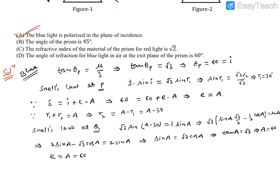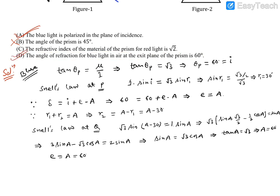So option B, which states the angle of prism is something other than 60°, is incorrect based on our calculations. Option D, which says the exit angle for blue light is 60°, is correct. So A is correct, B is incorrect, D is correct. Since this is multi-correct, we still need to check option C.